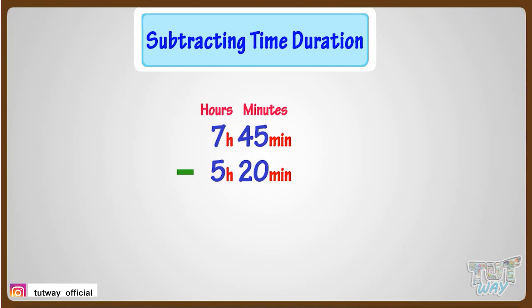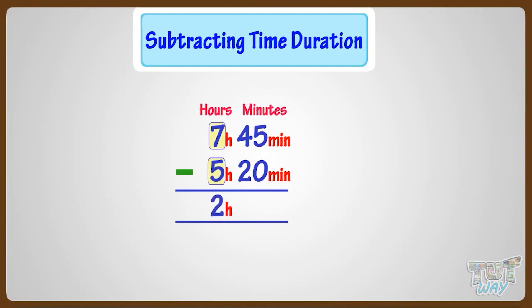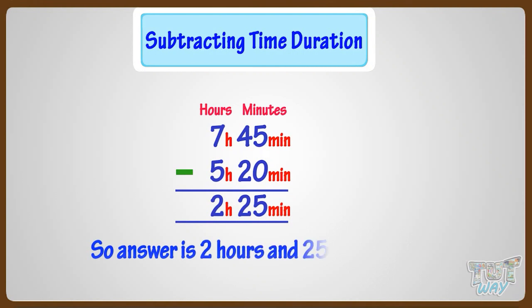Subtracting hours, that is, subtracting 5 hours from 7, we are left with 2 hours. Now subtract minutes from minutes. Subtracting 20 from 45 minutes, we are left with 25 minutes. So our answer is 2 hours, 25 minutes.